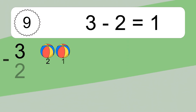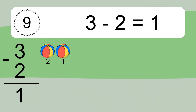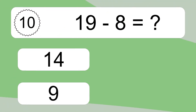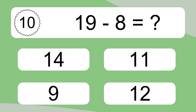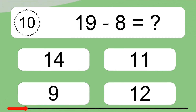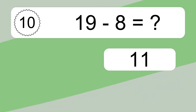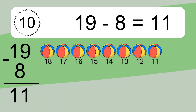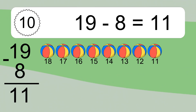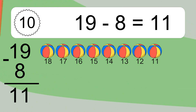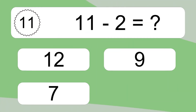3 minus 2 equals what? 3 minus 2 equals 1. Let's count it: 2, 1. 19 minus 8 equals what? 19 minus 8 equals 11. Let's count it: 18, 17, 16, 15, 14, 13, 12, 11.